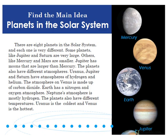Let's look at this story. It's called Planets in the Solar System. There are eight planets in the solar system and each one is very different. Some planets like Jupiter and Saturn are very large. Others like Mercury and Mars are smaller. Jupiter has moons that are larger than Mercury. The planets also have different atmospheres. Uranus, Jupiter, and Saturn have atmospheres of hydrogen and helium. The atmosphere on Venus is made up of carbon dioxide. Earth has a nitrogen and oxygen atmosphere. Neptune's atmosphere is mostly hydrogen. The planets also have different temperatures. Uranus is the coldest and Venus is the hottest.